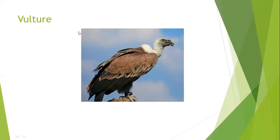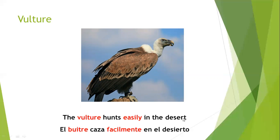Next one: vulture is buitre. The example: the vulture hunts easily in the desert — el buitre caza fácilmente en el desierto. Notice: the word easy means fácil, and easily means fácilmente. That is the manner in which the action occurs. Remember, these are adverbs of manner. Vulture/buitre, easily/fácilmente.